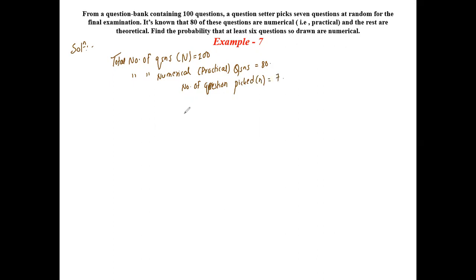Now we need to find the probability of selecting numerical questions. The probability P can be calculated as numerical practical questions upon total number of questions, which is 80 upon 100. That is 0.8. This is a binomial distribution.